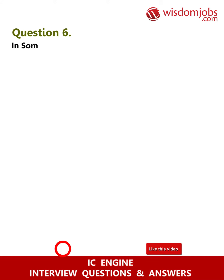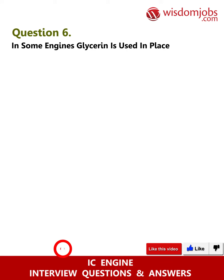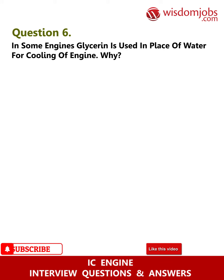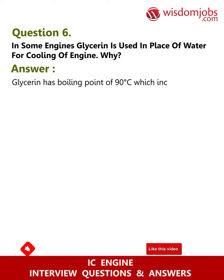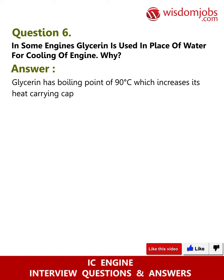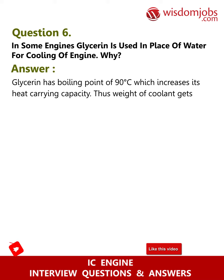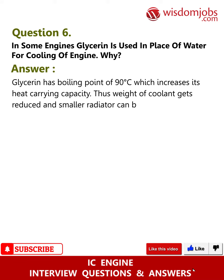Question 6: In some engines, glycerin is used in place of water for cooling. Why? Glycerin has a boiling point of 290 degrees Celsius, which increases its heat-carrying capacity. Thus the weight of the coolant gets reduced and smaller radiators can be used.